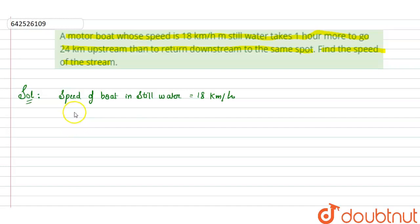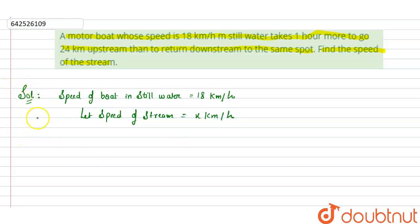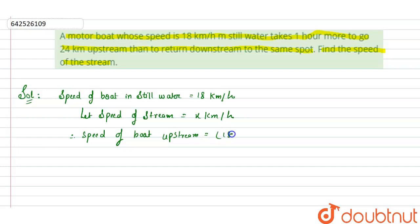Now let the speed of stream, which we have to find out, be x kilometers per hour. As we know, speed of boat upstream equals speed of boat in still water minus speed of stream. Therefore, speed of boat upstream is equals to 18 minus x kilometers per hour.